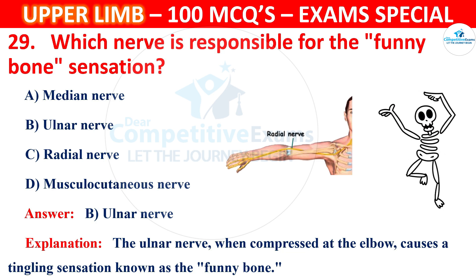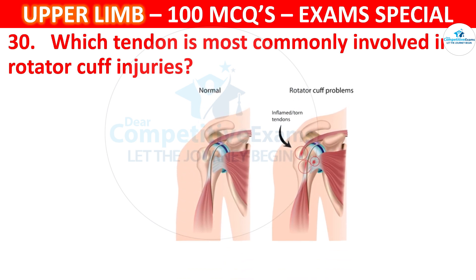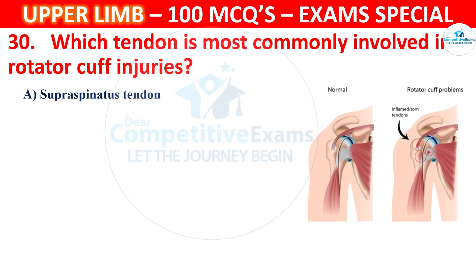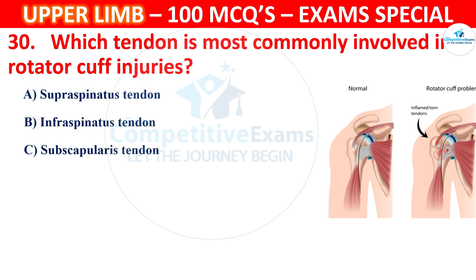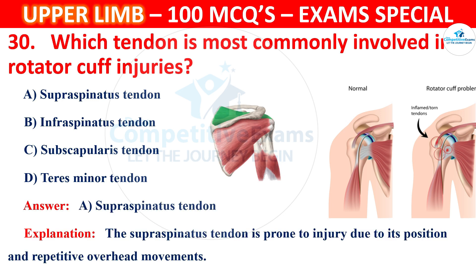Question number 30: Which tendon is most commonly involved in rotator cuff injuries? Options: supraspinatus tendon, infraspinatus tendon, subscapularis tendon, or teres minor tendon. The correct answer is A, supraspinatus tendon. The supraspinatus tendon is prone to injury due to its position and repetitive overhead movements.